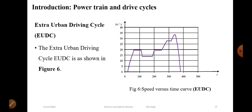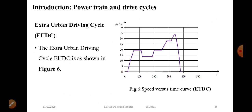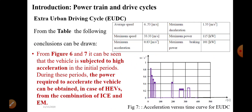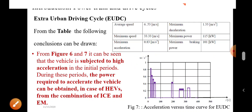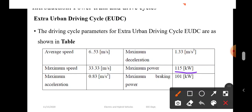This is the Extra Urban Driving Cycle (EUDC). That is the speed versus time curve. Comparing it to the NYCC, it is not a start-stop pattern. The maximum speed is around 33 to 34 meters per second. The maximum acceleration is 0.83 meters per second squared. The maximum power is 115 kW, so the power train must deliver 115 kW.